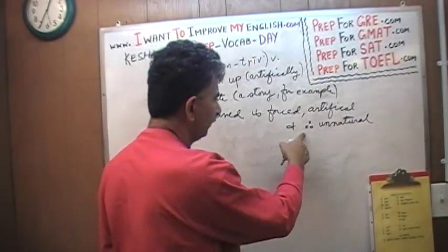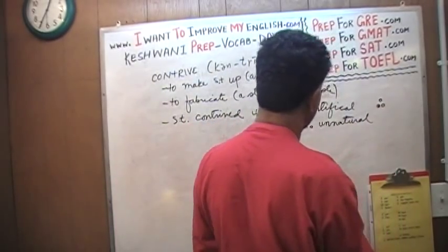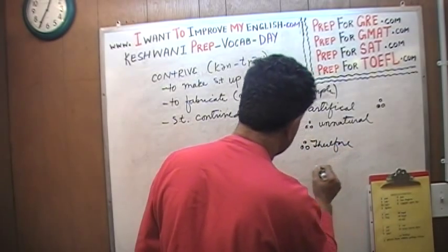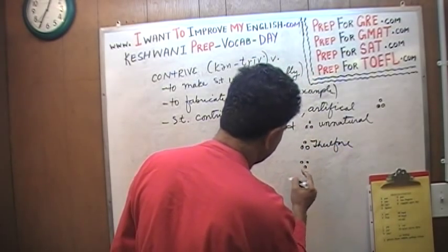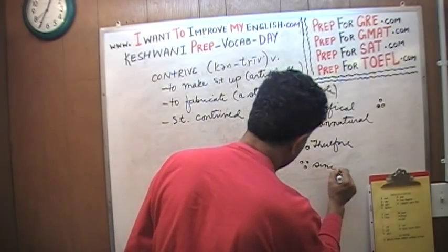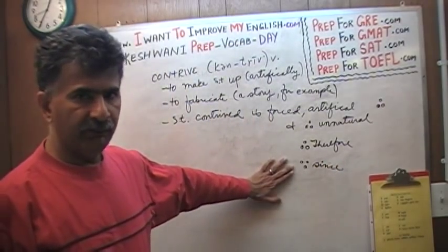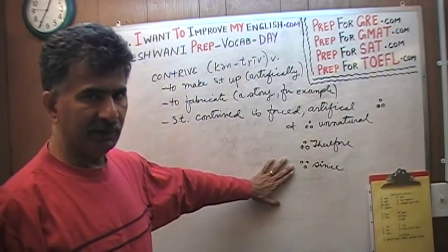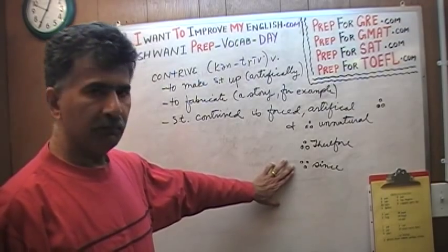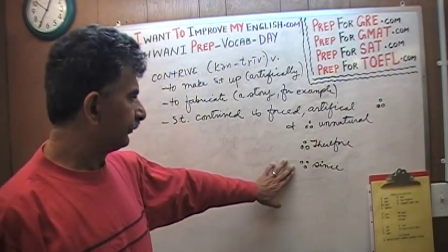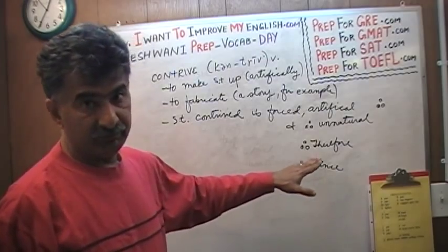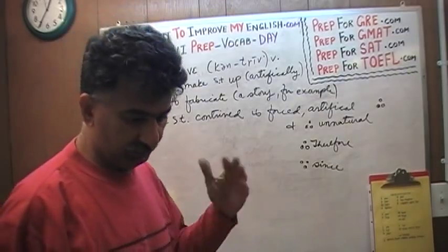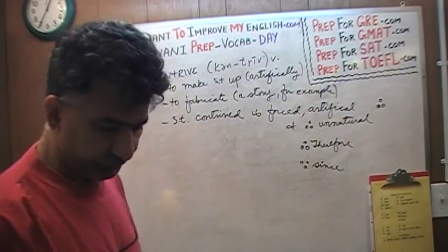For those of you who do not know this symbol, this means 'therefore.' The same symbol with a third dot at the bottom means 'since' — not since as in time, not since four o'clock, but since as in logic. For example: since A is bigger than B, and B is bigger than C, therefore A should be bigger than C.